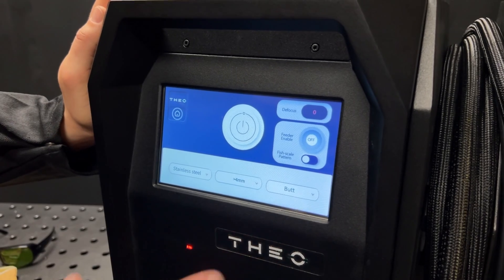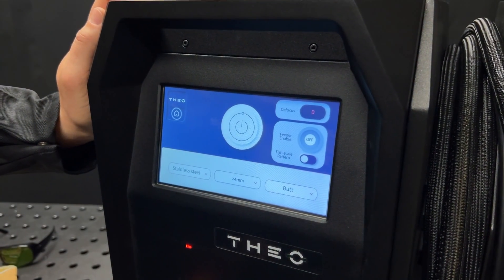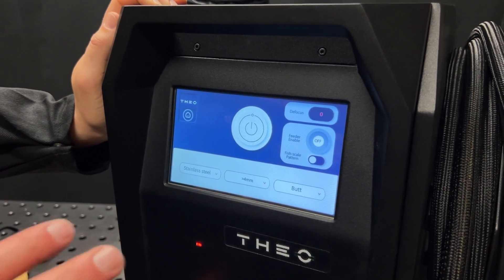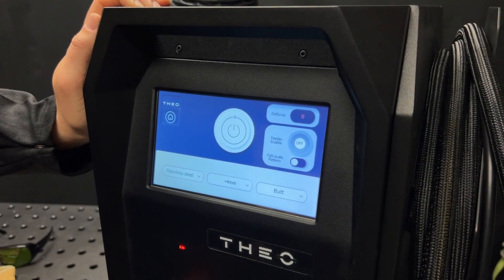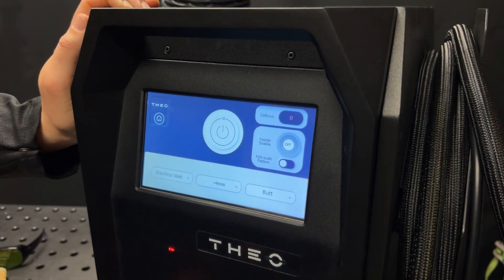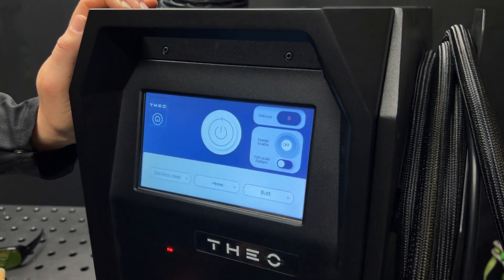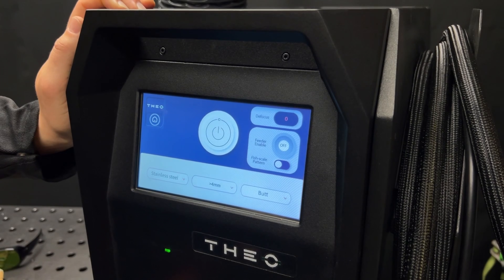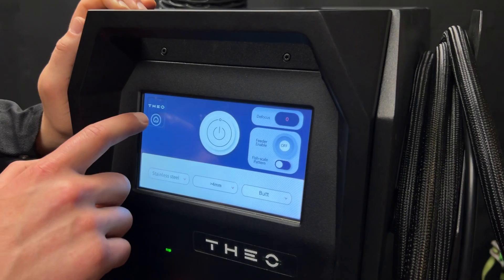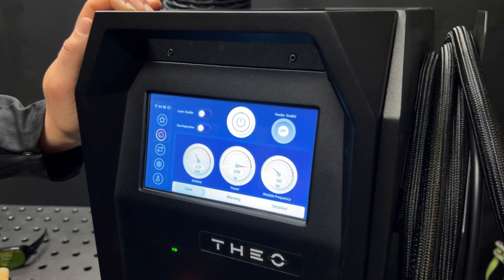So a few other features for us to look at is defocus. This number will tell you if you need to adjust the nozzle tube on the torch. Most of the time it's set at zero, but sometimes it would be plus or minus. We also have the wire feed enable. So if you are using a wire feeder, you'll select that switch to turn it on. And fish scale pattern will adjust the way the wire feeds to get a stacking dime appearance. Other than that, we have the home screen that will take us into some more background features as well, which we'll get into a little bit later.